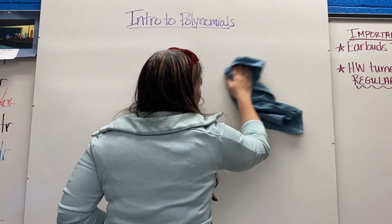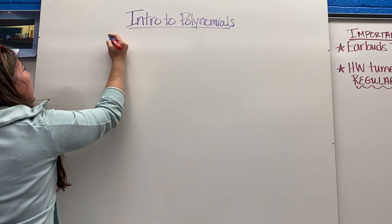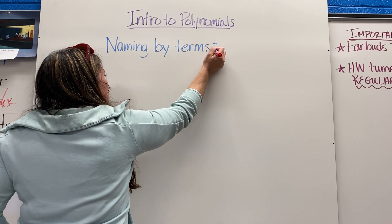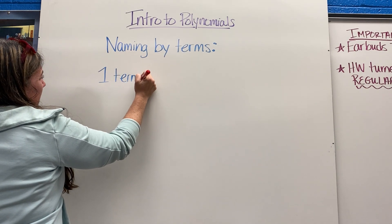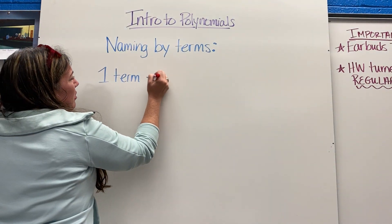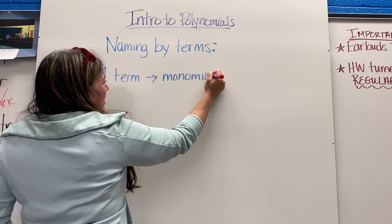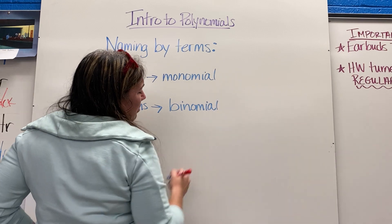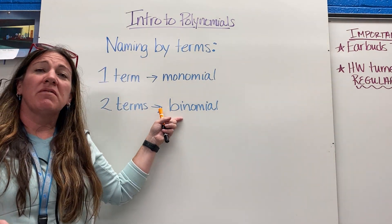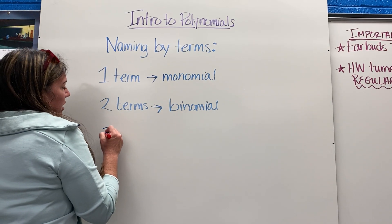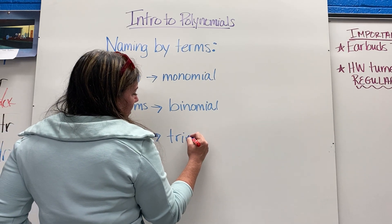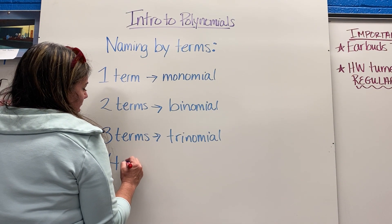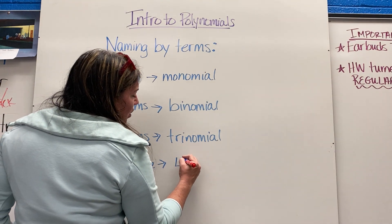Polynomials get different names. We're going to focus on naming them by the number of terms they have. If there is one term — nothing's being added or subtracted, like 3x — that's a monomial. If there are two terms, it's a binomial. The prefixes help: mono means one, bi means two — think bicycle, two wheels. Three terms is a trinomial — a tricycle has three wheels.